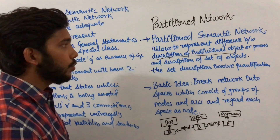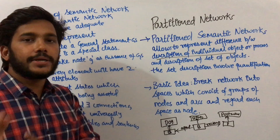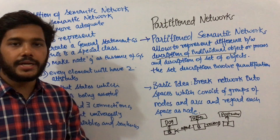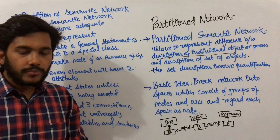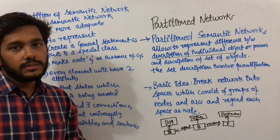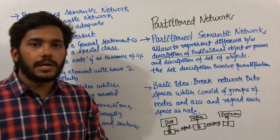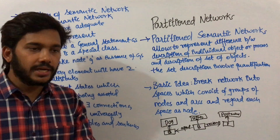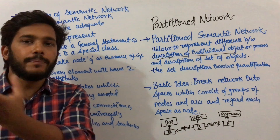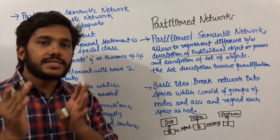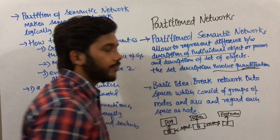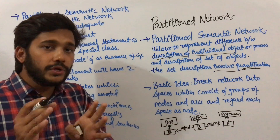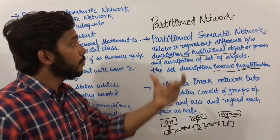We use partition semantic network when we want to distinguish between an object and a set of objects. For example, a dog is an object, but all dogs are a set of objects. A simple statement like 'Tom bites Ram' — where Tom is a dog and Ram is a postman — can be represented in a regular semantic network. But the statement 'all dogs have bitten every postman' involves quantifiers, both universal and existential, so we use partition network.